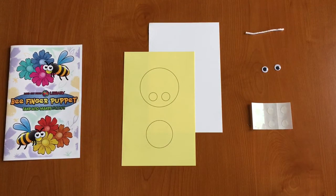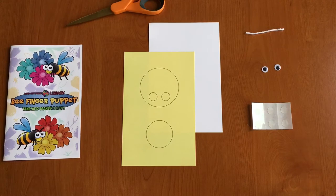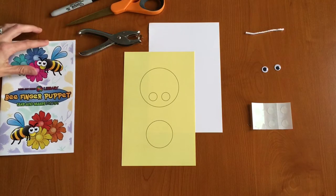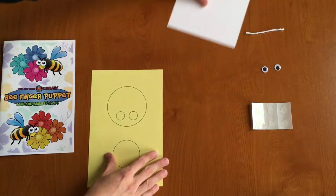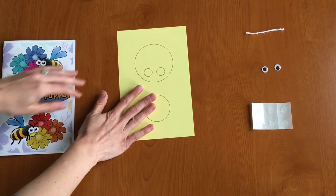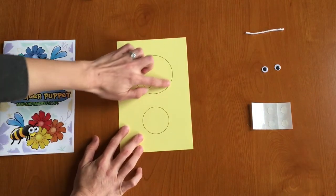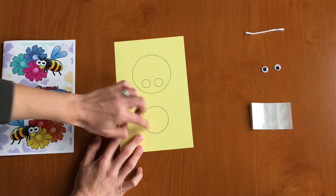You're also going to need some scissors, a black marker, and a hole punch will really help out. So let's get started. Our first step is going to be to take our yellow piece of paper and we're going to cut out the large yellow circle and this small yellow circle.